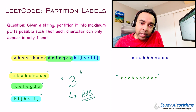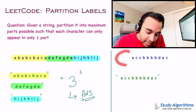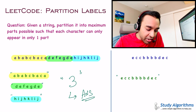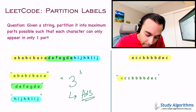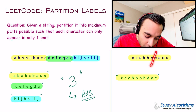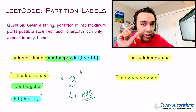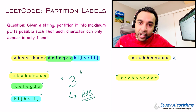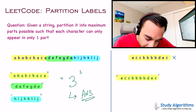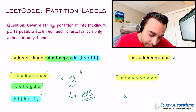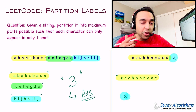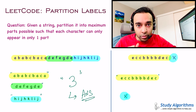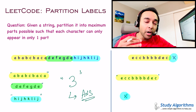Let us look at another test case — test case number 2. In this test case, you can only find one partition, and that is the entire string. There is no other way to partition this string such that each partition has distinct characters. But for example, if this string had one more character X, then you could make one more partition — just X — giving you two partitions. Now, if you have understood this problem statement, feel free to try it on your own. Otherwise, let me show you how to solve it.